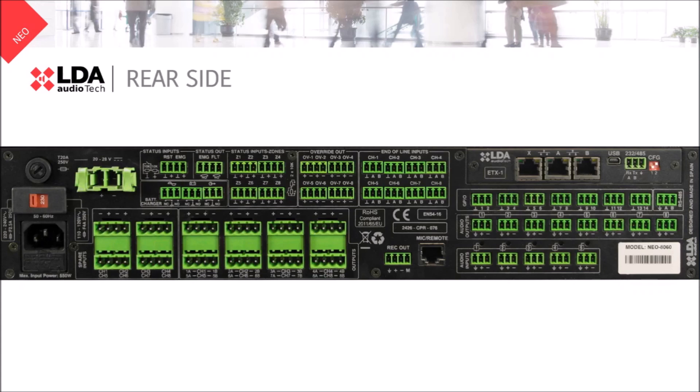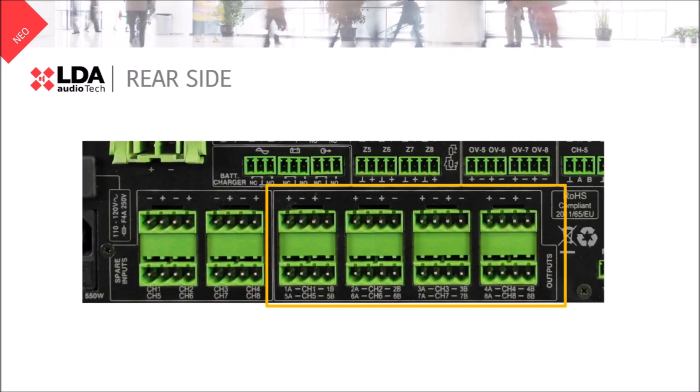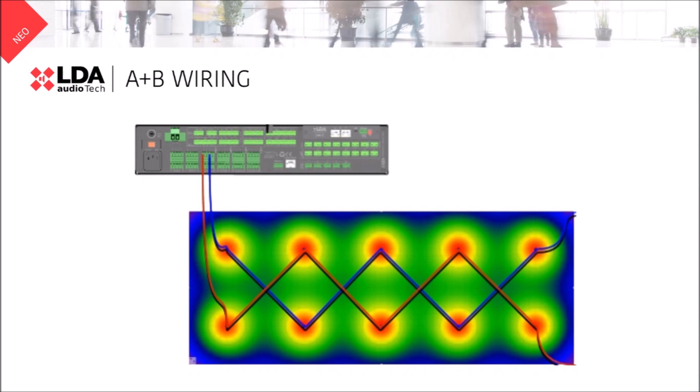The audio inputs in the rear side are clear, but what about the audio outputs? These are the 100 volt outputs where you can connect your speaker lines. Please note there are eight amplifier channels with 16 physical outputs. This will allow us to create an A plus B installation, as you can see in this picture.